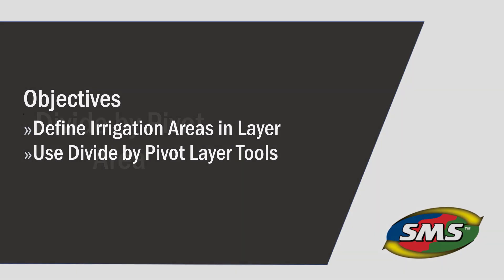In this video, we will cover how to use the Divide by Pivot Area tool found in the Generic Editor of the SMS Desktop software. By defining your irrigation types in a management layer, it allows you to manage the field based on potential yield that it may produce based on its varying available resources. This helps when creating variable rate prescriptions and field analysis processes.